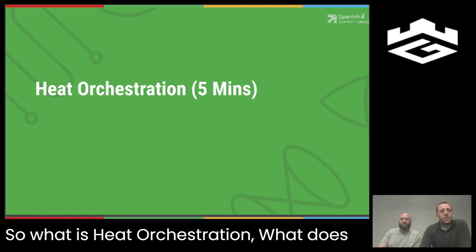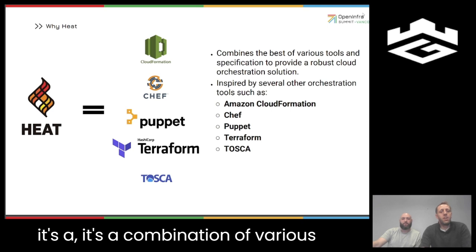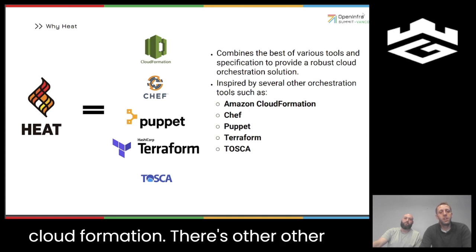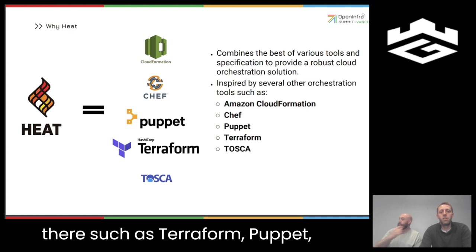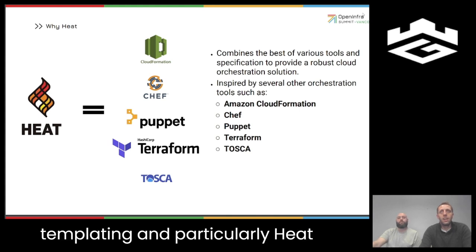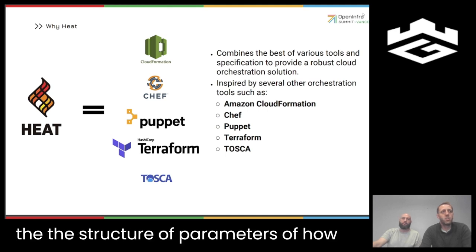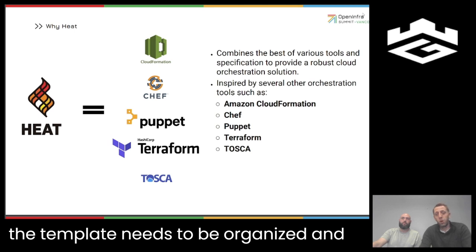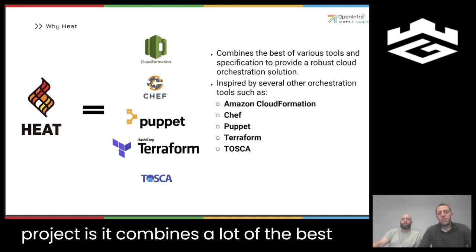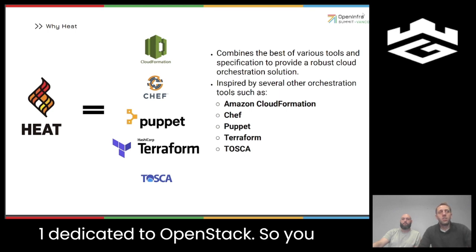So what is heat orchestration? Heat is a combination of various open source and closed source tools. In AWS you have CloudFormation; there are other automation and orchestration tools such as Terraform, Puppet, and Chef. With templating, particularly heat templates, there's what's known as TOSCA, which defines the structure and parameters of how the template needs to be organized. The benefit of Heat as an OpenStack project is it combines the best parts of each of these different tools into one, dedicated to OpenStack.